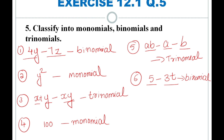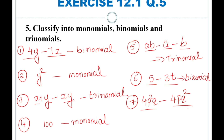Now the seventh expression is 4p squared q minus 4pq squared. There are two terms here, so this is a binomial.